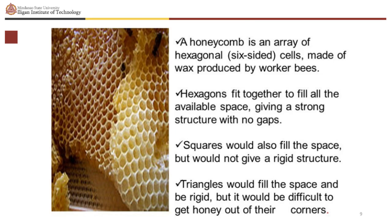Squares would also fill the space but would not give a rigid structure. Triangles would fill the space and be rigid, but it would be difficult to get honey out of their corners.